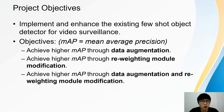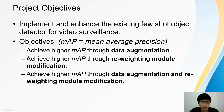The main concentration of the project is to implement and enhance the existing few-shot object detector for video surveillance. There are three objectives in this project. The first objective is to achieve higher mean average precision through data augmentation. The second objective is to achieve higher mean average precision through reweighting module modifications. The last objective is to achieve higher mean average precision through both data augmentation and reweighting module modifications.